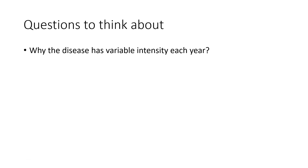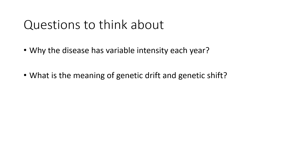Why does the disease have variable intensity every year? It depends on the presence or absence of specific antigenic characters of the virus, which is called genetic drift and genetic shift — meaning the change in the antigenic characters of the virus.